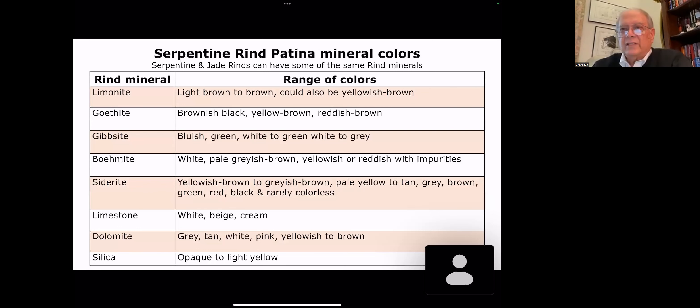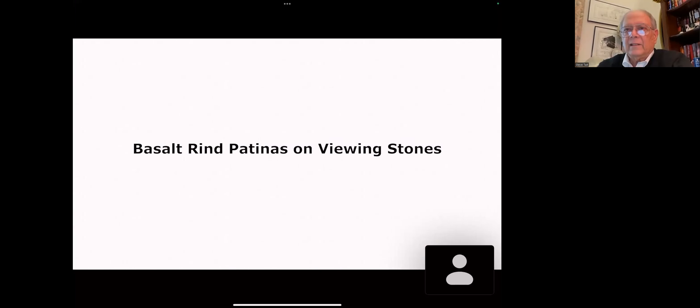Serpentine rind minerals, there's a lot of commonality with the jade rinds. So you'll see the list has many of the same ones that we've already talked about, but we're also adding now limestone, which gives you your white or beige or cream color, dolomite, gray, tan, white, pink, yellowish to brown, almost what color do you want, and silica, which is your opaque to light yellow. Let's talk about basalt.